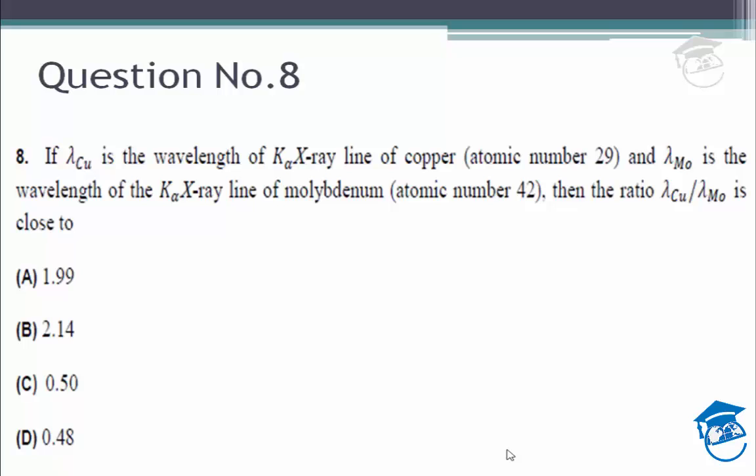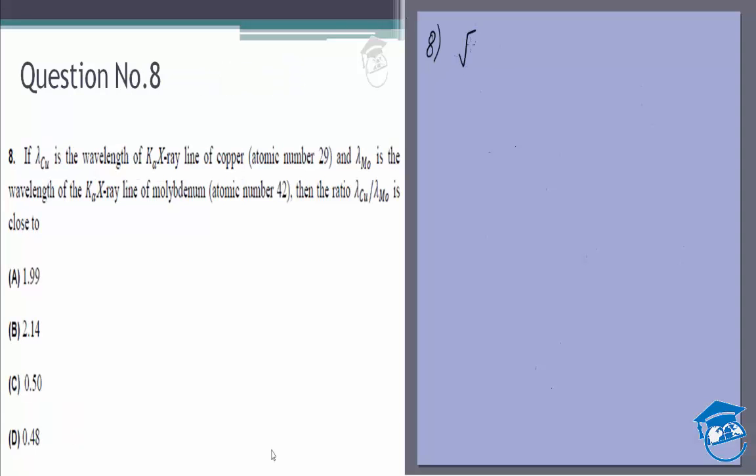We already know the relation between the frequency for the K-alpha line, root mu, is equal to A times Z minus B. And you often take B is equal to 1 unless something else is given. So it's A into Z minus 1.